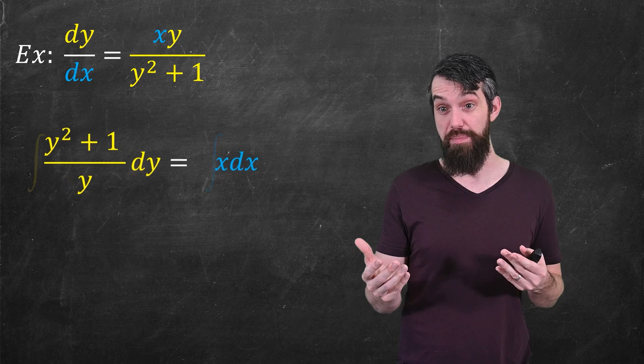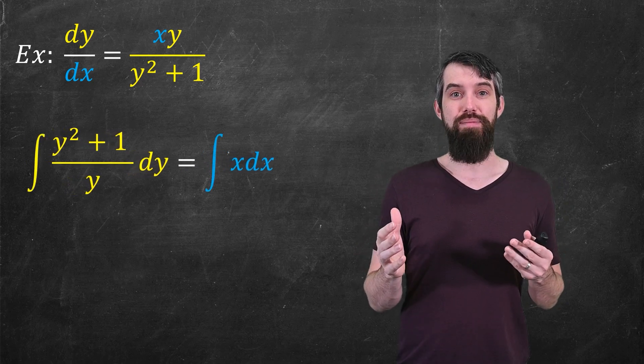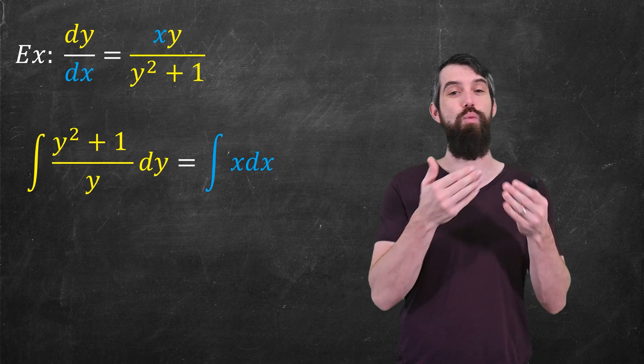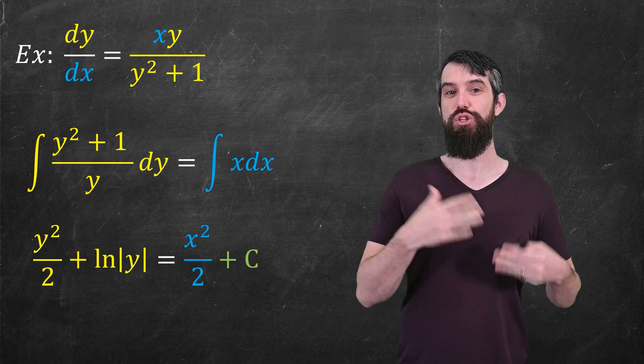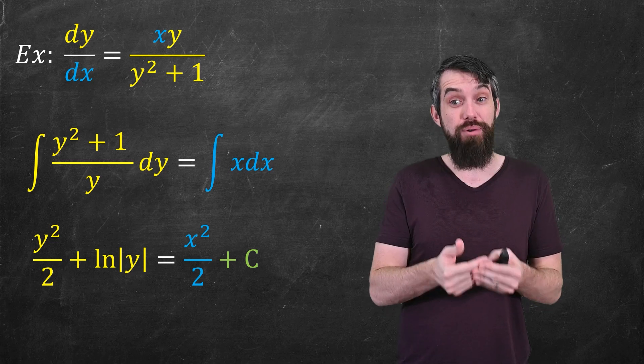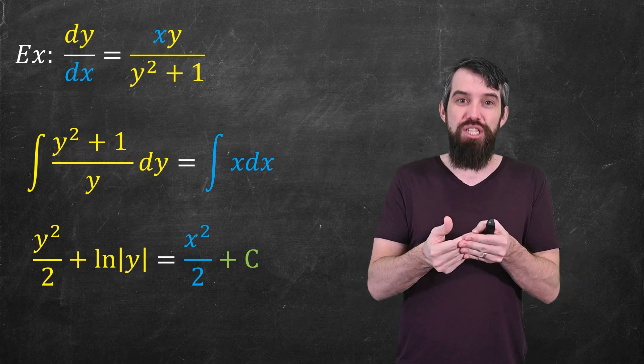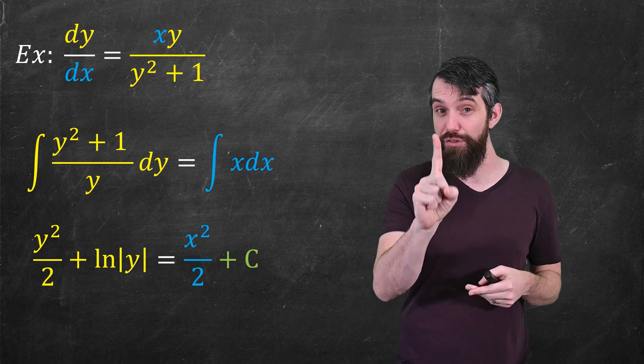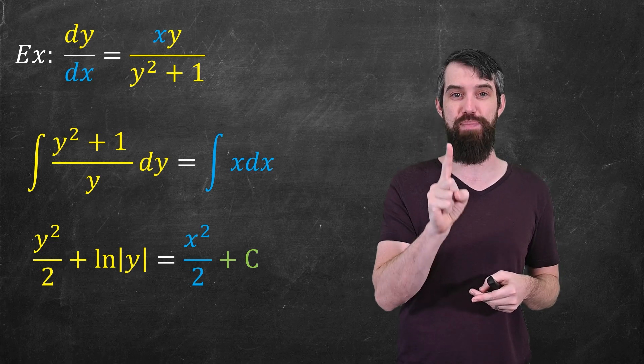Okay, so now I integrate both sides, which is great. And now it's just a matter of doing those integrals. So on the left-hand side, y squared divided by y is just y. It integrates out to y squared divided by 2. 1 over y integrates to log of y. x integrates to x squared divided by 2. And then of course I always have to add that plus c.